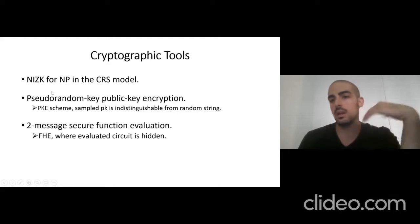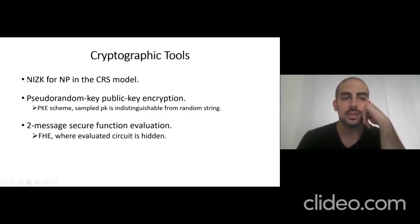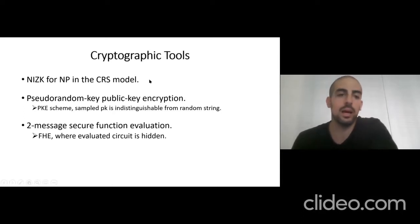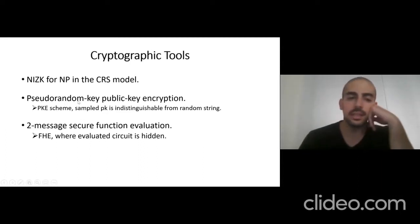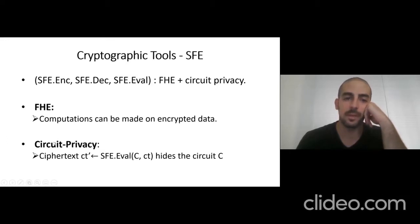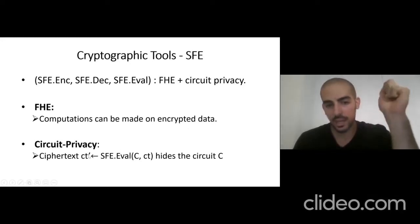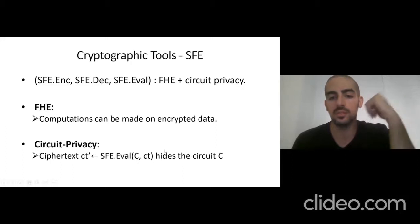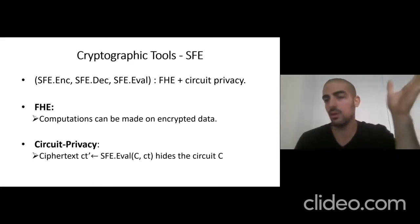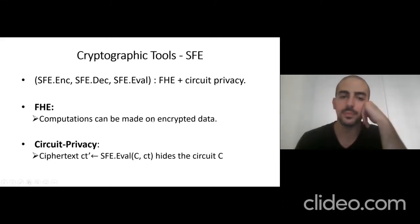The tools we're going to use, along with Sigma protocols for QMA, are: NIZK for NP in the CRS model; a pseudorandom public-key encryption, where the public key is indistinguishable from a random string; and a two-message SFE (secure function evaluation), which is essentially fully homomorphic encryption with the additional guarantee of circuit privacy. Circuit privacy means that if we have an encryption of X and we homomorphically evaluate some circuit C to get an encryption of C(X), this encryption hides everything about C — it only reveals C(X).